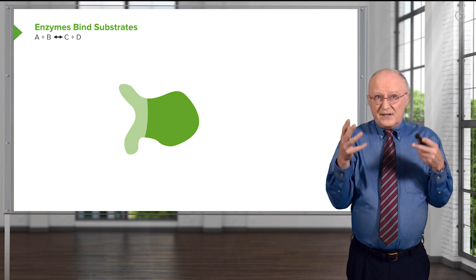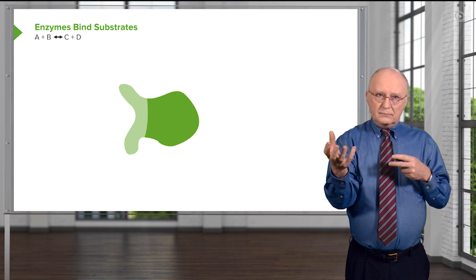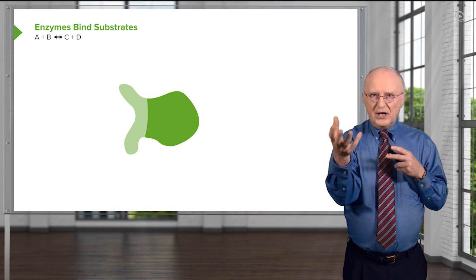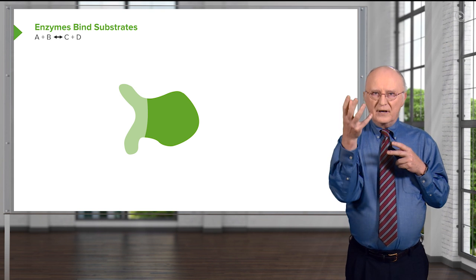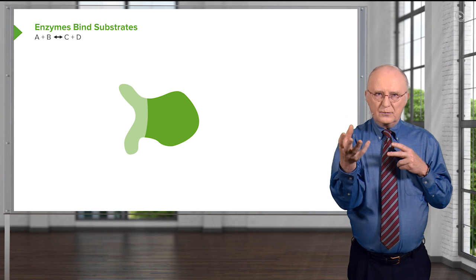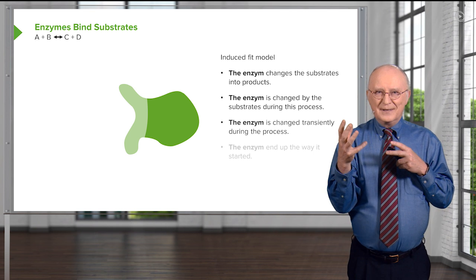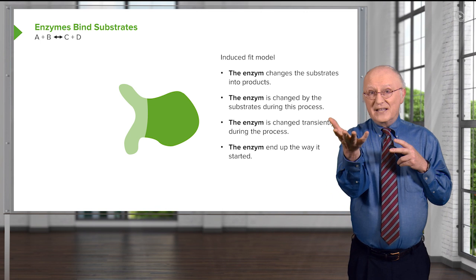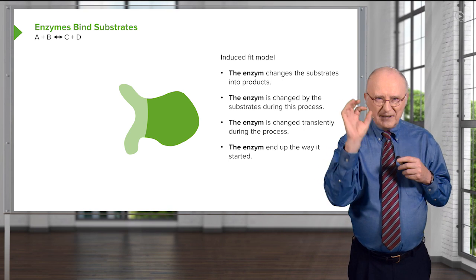Now, if we think about this, our definition of a catalyst that everybody learns in freshman chemistry is a molecule or an entity that catalyzes a reaction, but it's unchanged in the process. That's a principle that is hammered into every freshman chemistry student. Now, we see that enzymes are actually slightly violating that principle. They're being changed transiently during the process, but they end up in the end in the same way they started. So, overall, they're not violating it, but they cheat a bit.